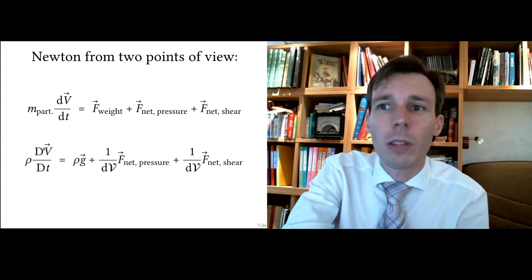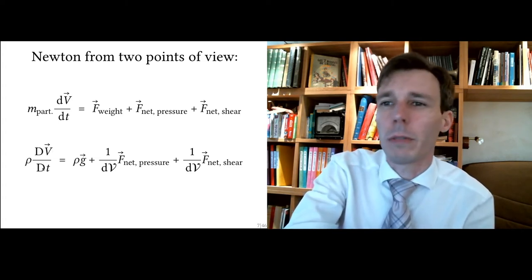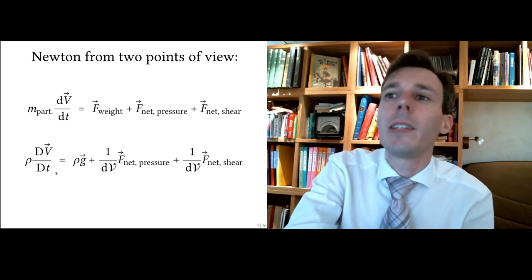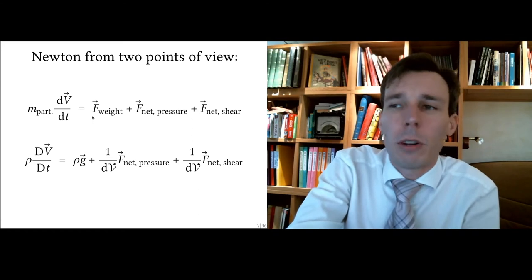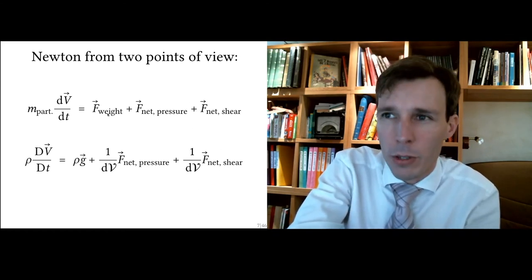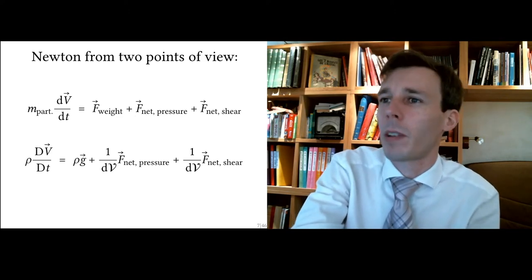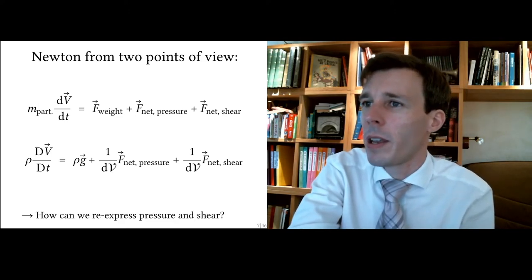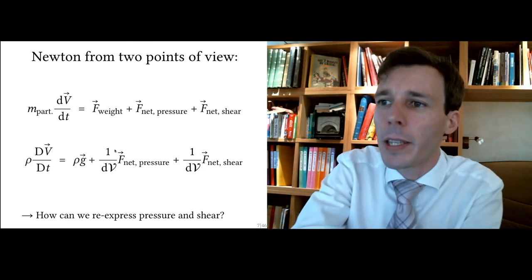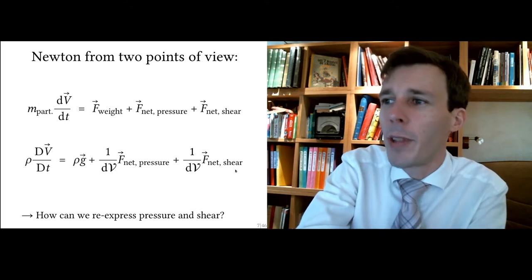Using the grid's point of view, we have a total derivative: density times the total derivative equals one over the volume multiplied by the force of weight, plus the force due to pressure, and the force due to shear. To get the Cauchy equation, we now rewrite the net forces due to pressure and shear as a function of the fluid properties.